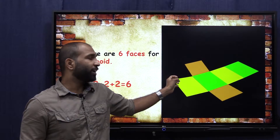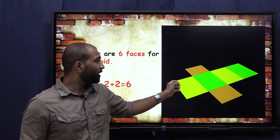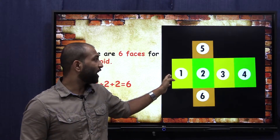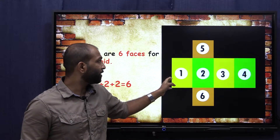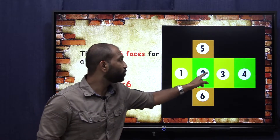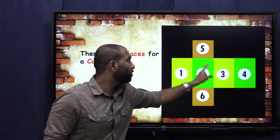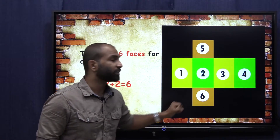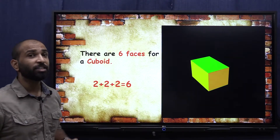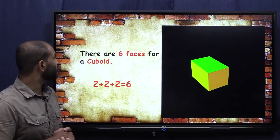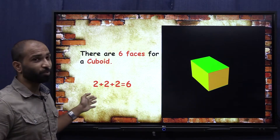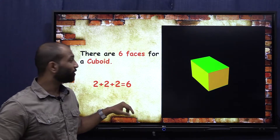This cuboid is getting opened up and you can see how many faces there are — one, two, three, four, five and six. There are six faces for a cuboid.